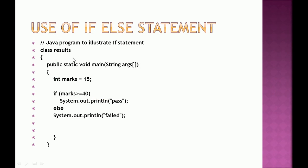In the if-else example, marks is initialized to 15. If marks is greater than or equal to 40 it will print 'pass', otherwise the else part executes. Since 15 is not greater than or equal to 40, this condition is false, so the control moves to the else part and it will print 'failed'. I'll explain these things further in the practical implementation.